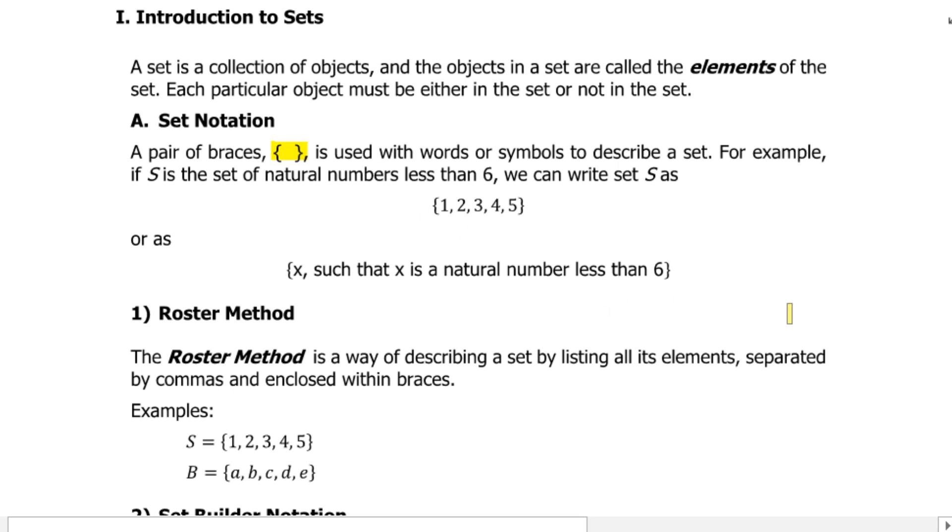How do we write a set? A pair of braces is used with words or symbols to describe a set. For example, if S is the set of natural numbers less than six, we can write set S as this one or this one. As you can see, there are two ways to write a set. In the first one, we have listed all the elements in the set: one, two, three, four, five. These elements are separated by commas. In the second one, we have used a statement to describe the set.